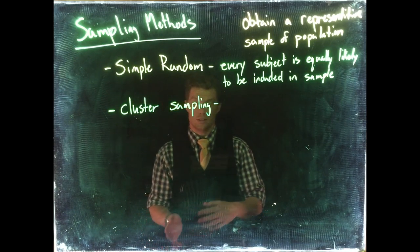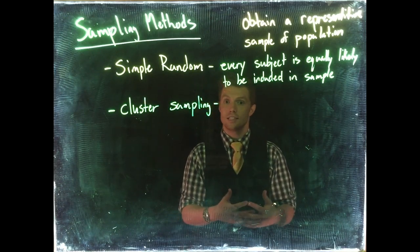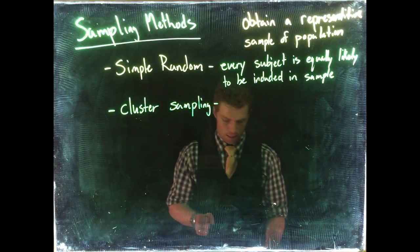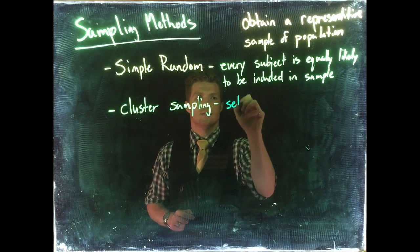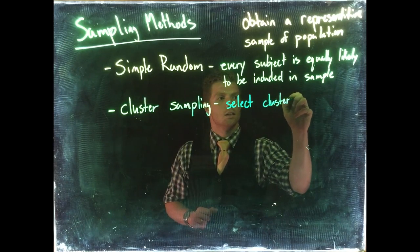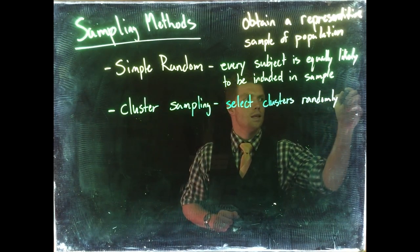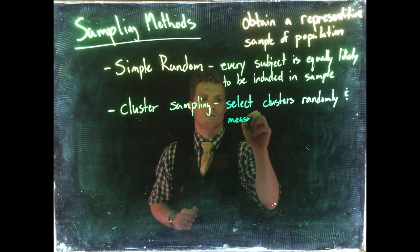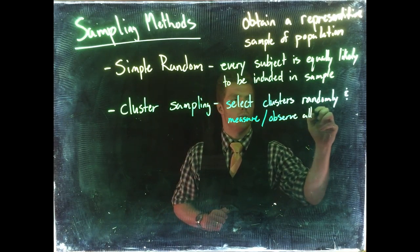What we would do is randomly select 15 classes, and then we would gather the data from everybody inside those randomly selected classes. So this would be: select clusters randomly and measure or observe all within.